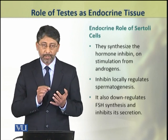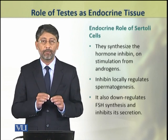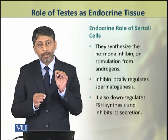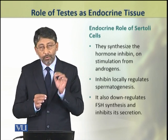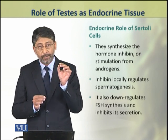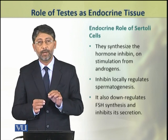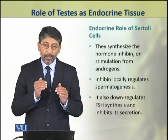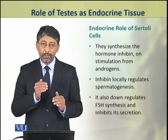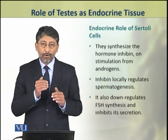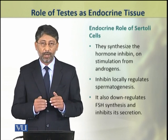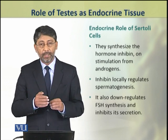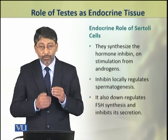Inhibin is secreted on stimulation from androgens. It locally regulates the process of spermatogenesis and is also involved in the down-regulation of FSH hormone from the pituitary gland.